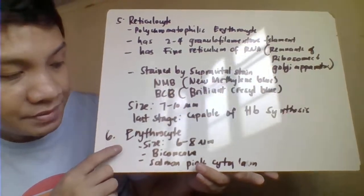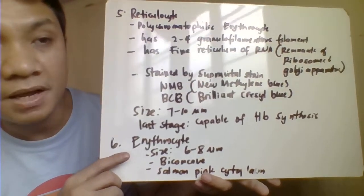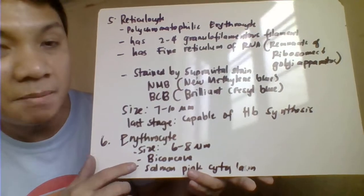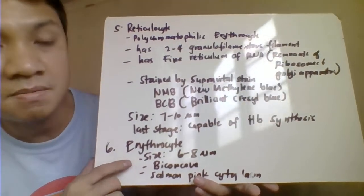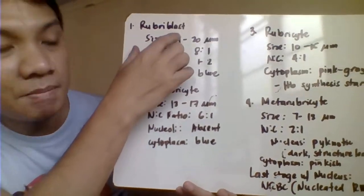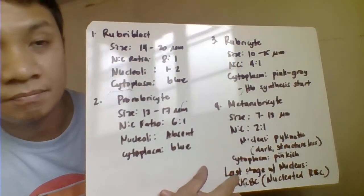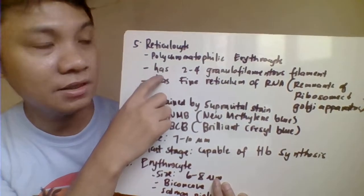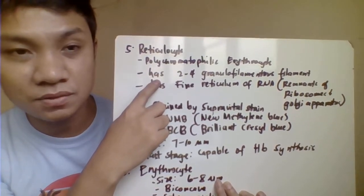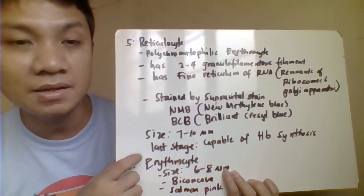The mature erythrocyte measures 6 to 8 micrometers in diameter, is biconcave in shape, has a salmon-pink cytoplasm, and has no nucleus. The nucleus was present from the rubriblast through the metarubricyte stage, and both reticulocytes and mature RBCs are anucleated.